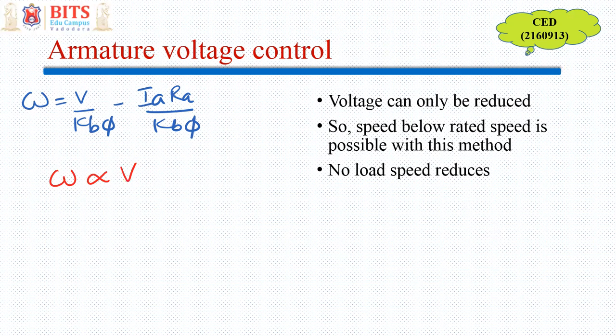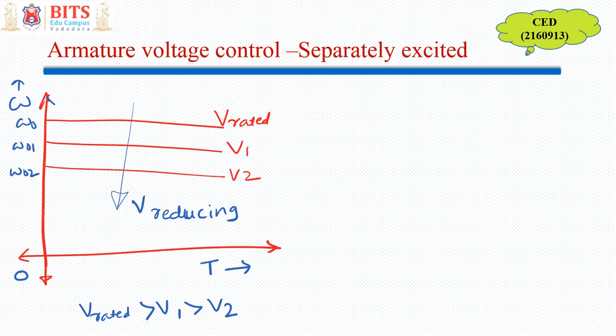No load speed will also reduce. Let's see how this method is applicable for separately excited. So you can see when you apply rated voltage, the characteristic is the top one. When you reduce the voltage, you get characteristics parallel to the rated one but below it. So likewise, if I go on reducing the voltage, I get characteristics below it.